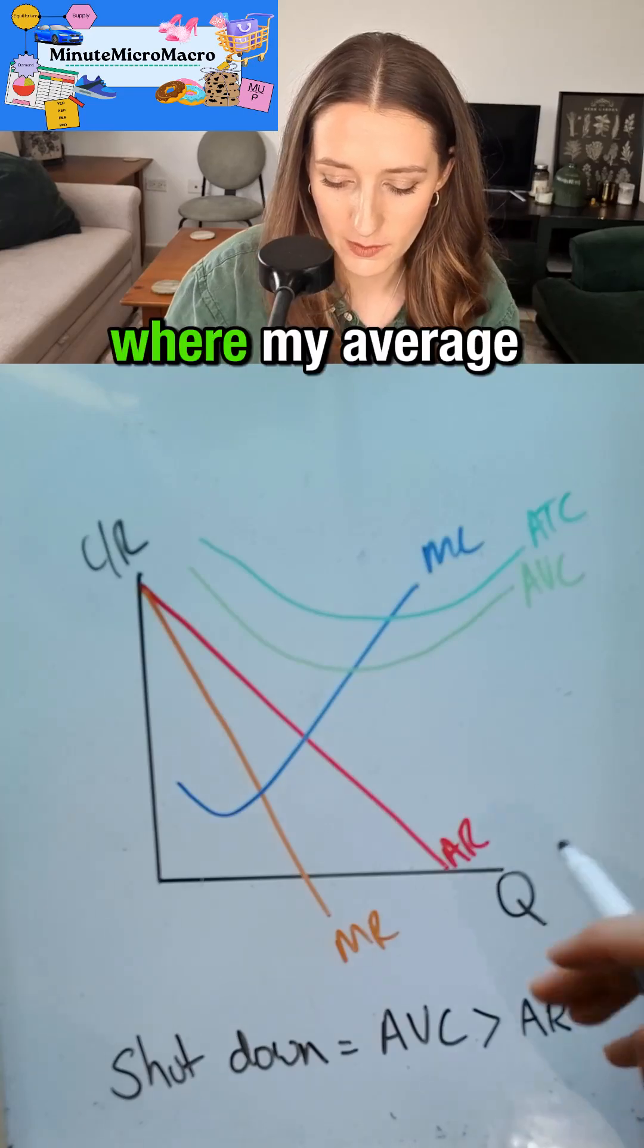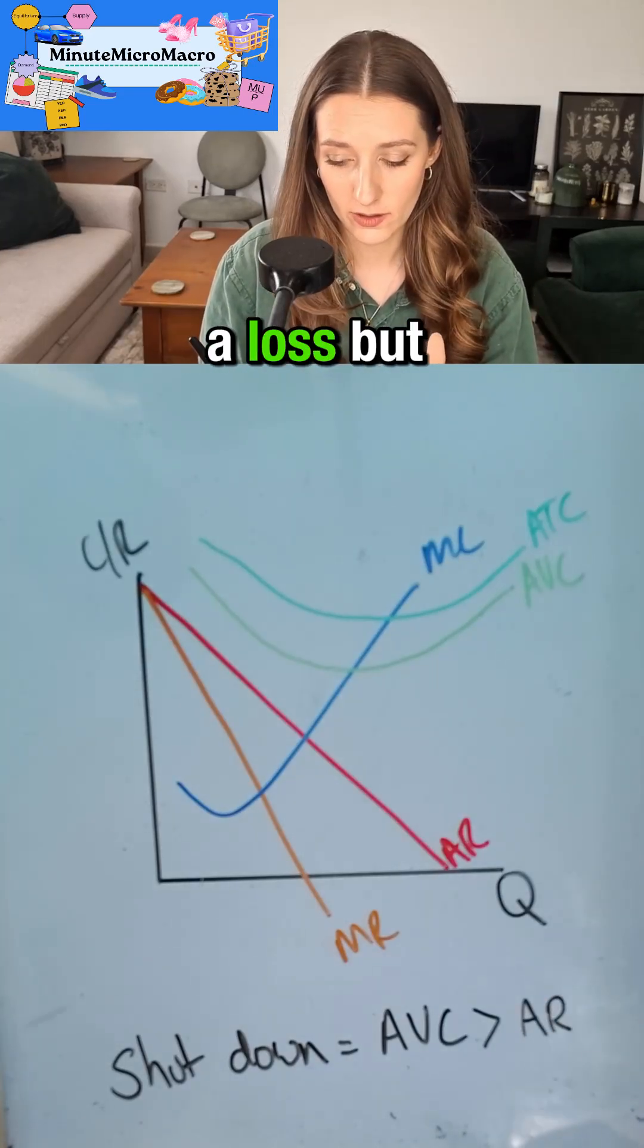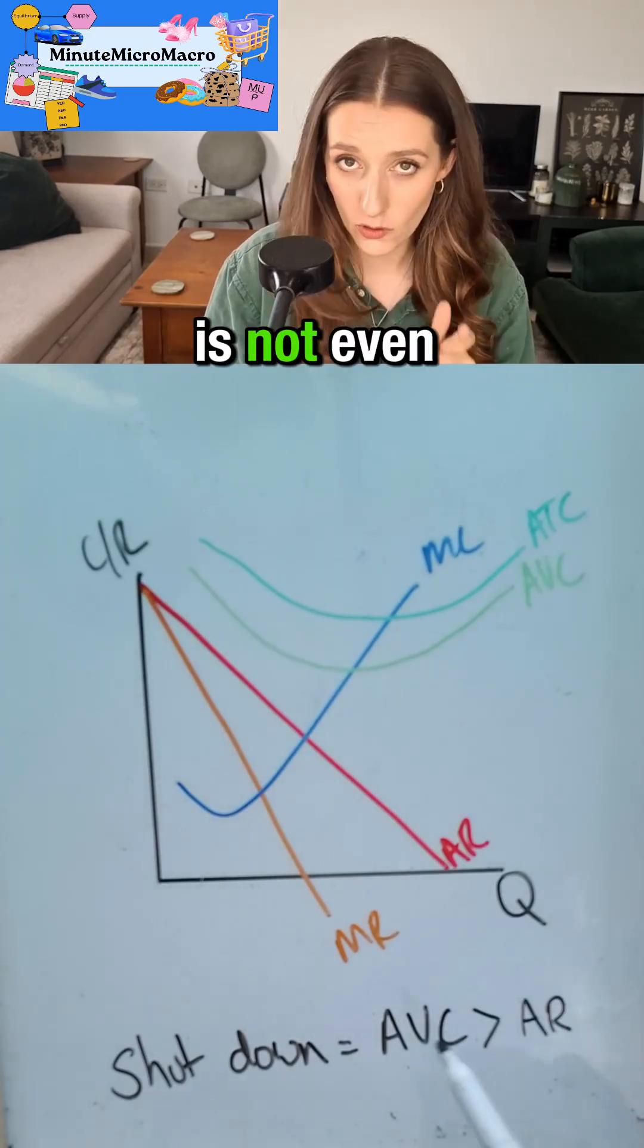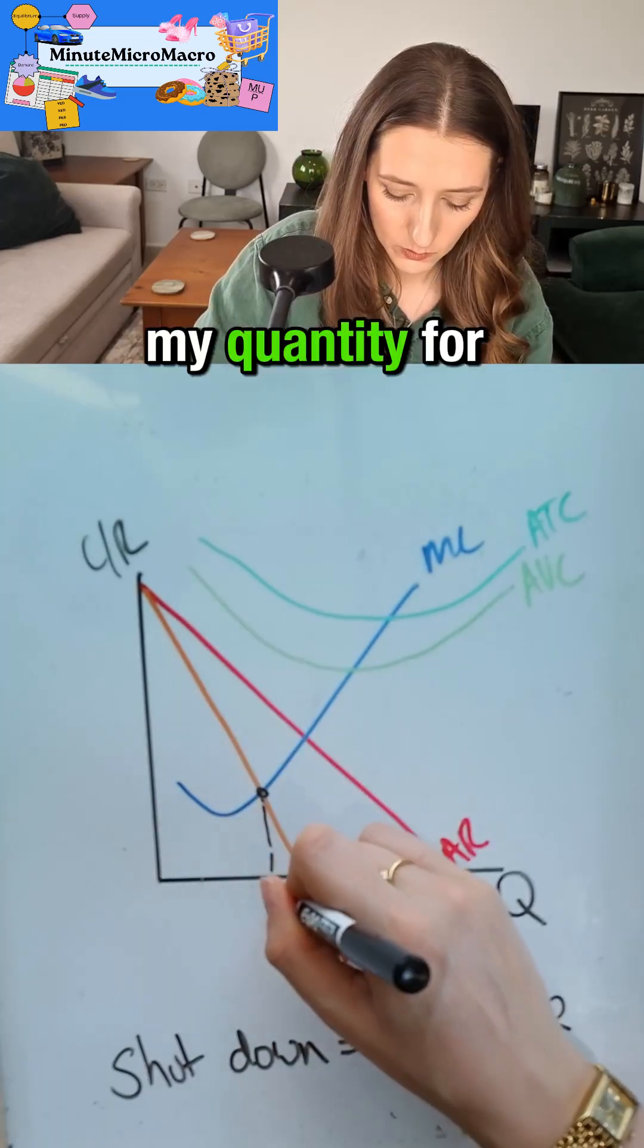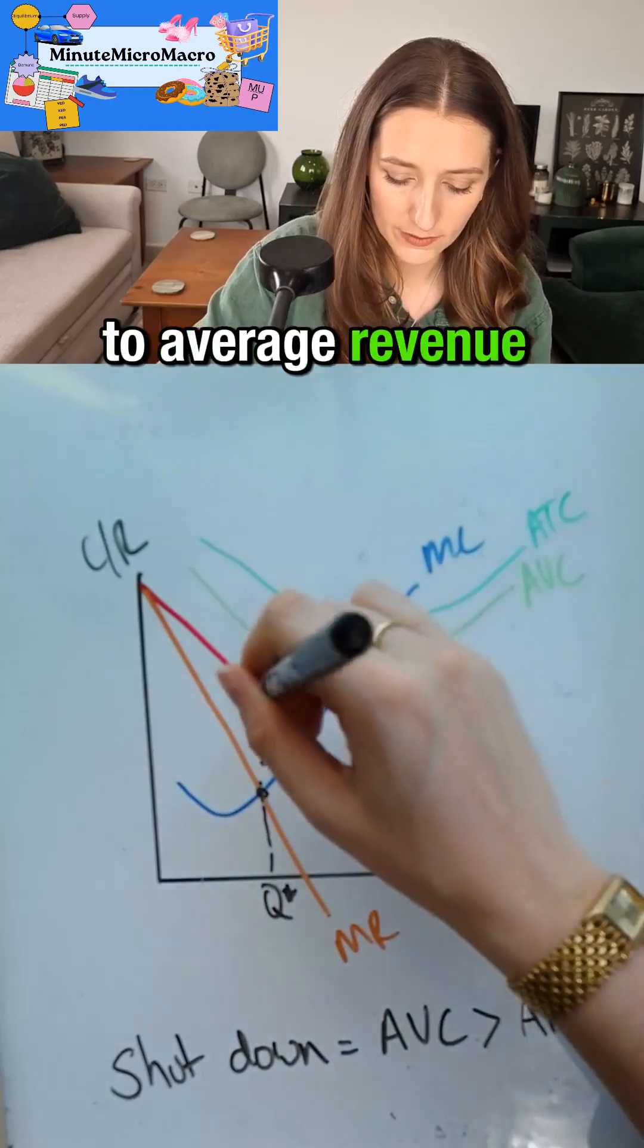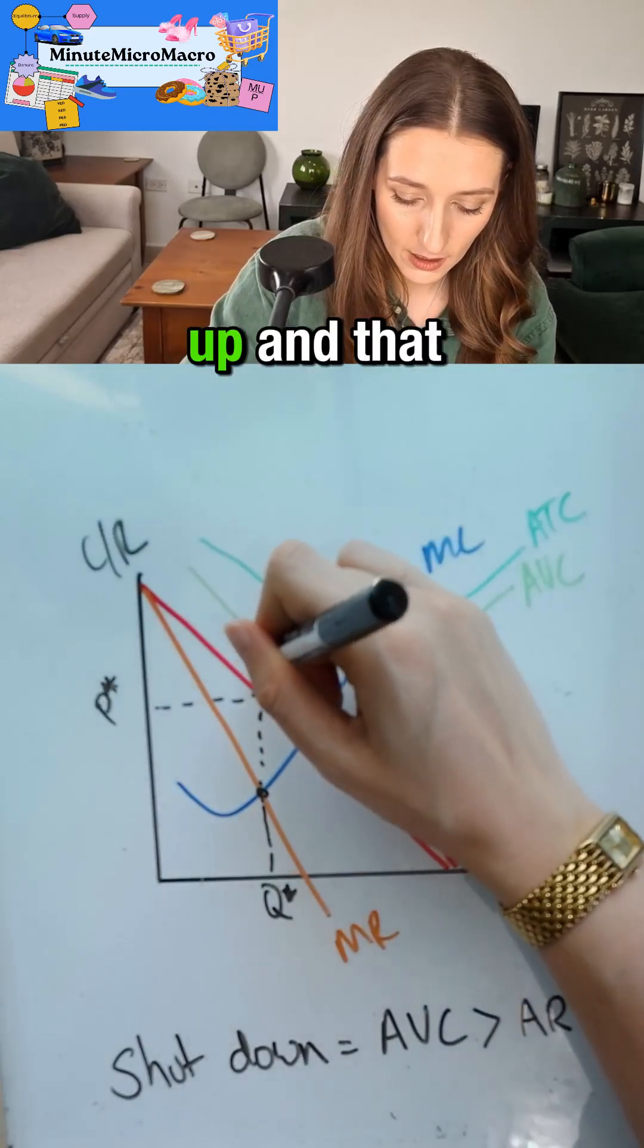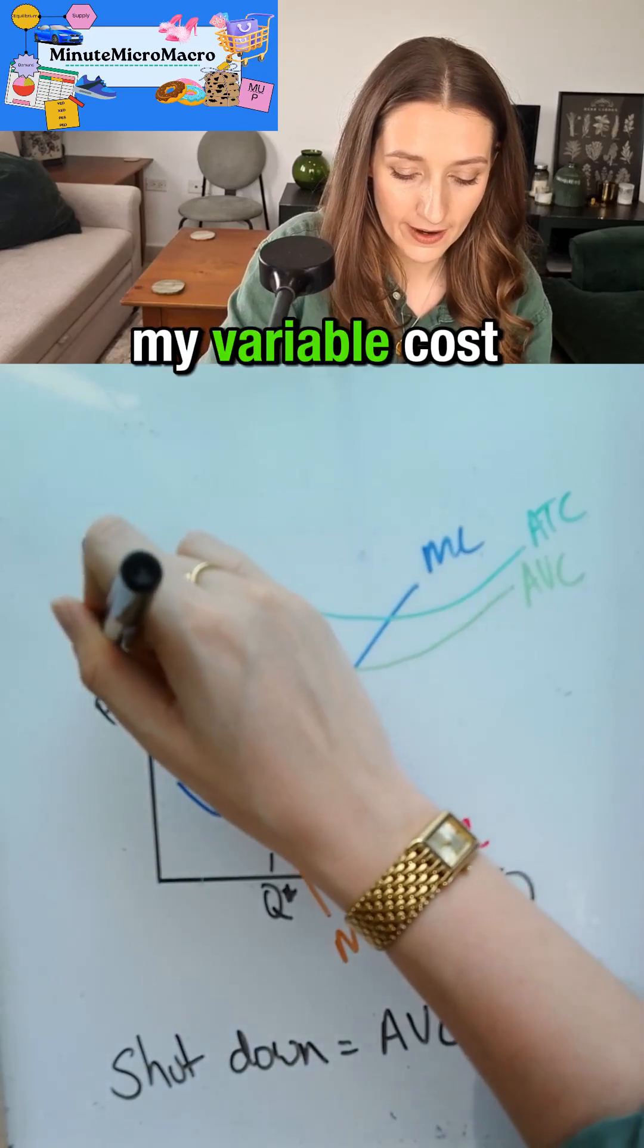I've managed to draw a diagram where my average total cost is above my average revenue so I'm making a loss, but also my average variable cost is above my average revenue so my revenue is not even covering my variable costs. I go to MC equals MR, my quantity for a profit maximizer is set. I'd go up to average revenue and read across that is the price that I could sell my good for. I keep reading up and that is the cost per unit and this is my variable cost.